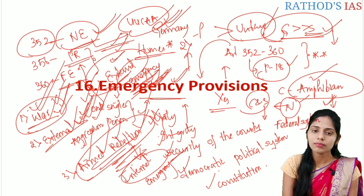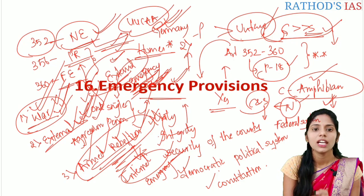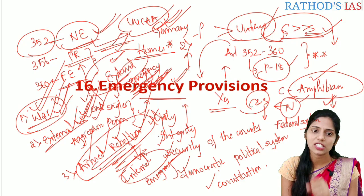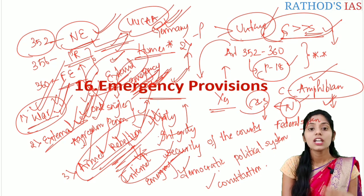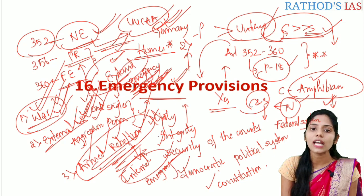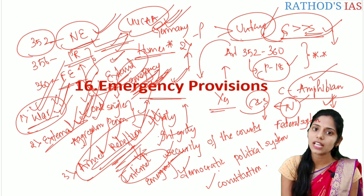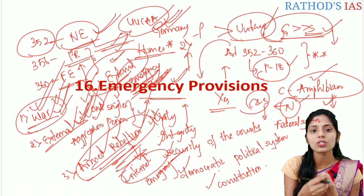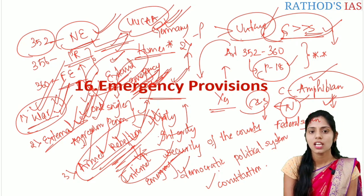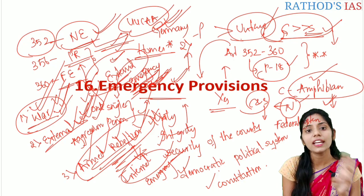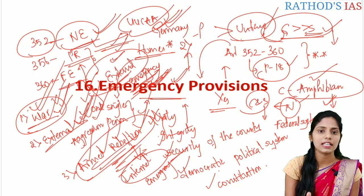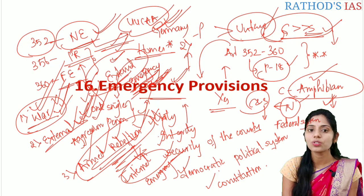The second important change from the 44th constitutional amendment act is that there should be written consent from the cabinet to the president mainly to proclaim the national emergency. So these are two important changes you should remember at any cost. In this lecture we are going to see national emergency, article 352, the grounds on which it is imposed, proclamation, revocation, and the effects — including effect on centre-state relations, effect on the life of Lok Sabha and state legislative assemblies, and effect on fundamental rights.